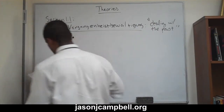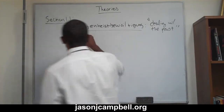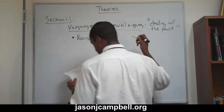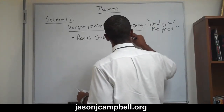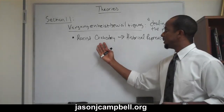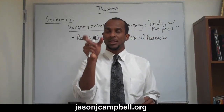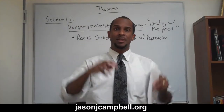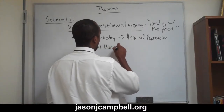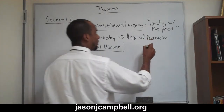The first thing to recognize in this idea of dealing with the past is that racist orthodoxy, as the majority, creates the condition for historical repression. Racist orthodoxy is the antecedent cause, or one of the antecedent causes, for historical repression. By historical repression, what we're saying is that the narratives from those individuals that have been oppressed are suppressed, repressed by the dominant discourse, so that this becomes a corollary with the dominant discourse.